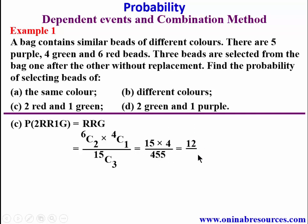Simplifying, we have 15 times 4 over 455, which gives 60 over 455, simplifying to 12 over 91. That is the probability of selecting three beads with two red and one green.